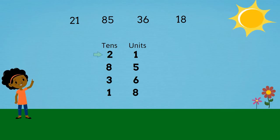Which is the largest number? 2, 8, 3 or 1? It's 8. So we'll put 85 down.